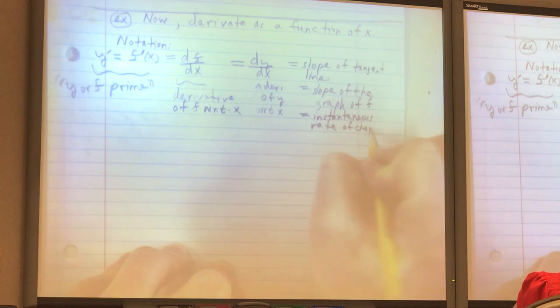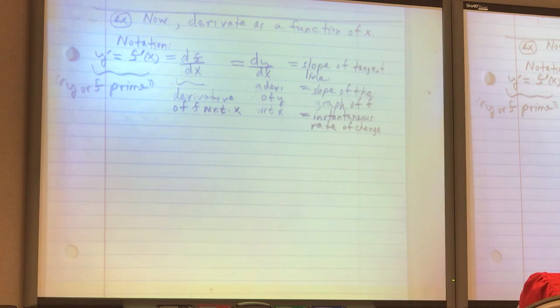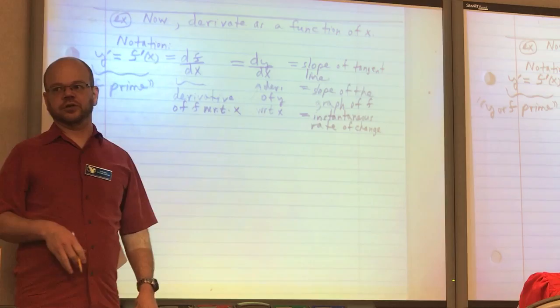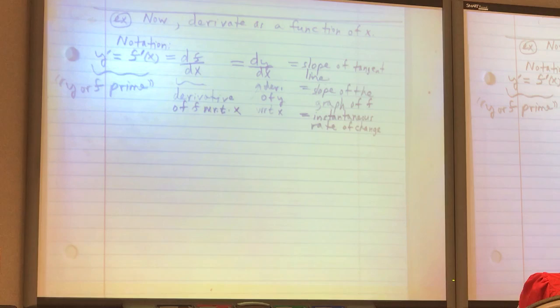Sometimes this is just called rate of change. And if they don't use the word average, then it's interpreted, it's understood that that means instantaneous rate of change. So they don't always have to say instantaneous, they could just say rate of change. All right, so let me give you an example.